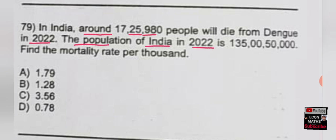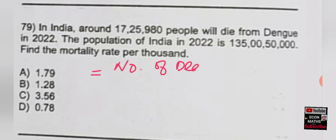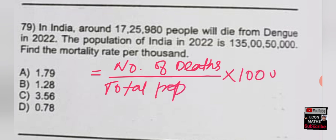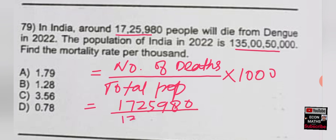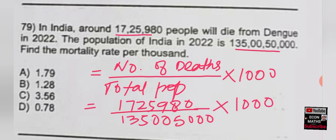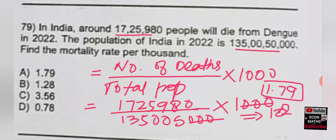The next question: in India, around 17,25,980 people died from dengue in 2022. The population of India in 2022 is 135 crore 50 lakh. Find the mortality rate per thousand. Mortality rate per thousand = (Number of deaths / Total population) × 1000 = 17,25,980 / 1,35,50,000 × 1000 = approximately 1.79. The correct option is 1.79.